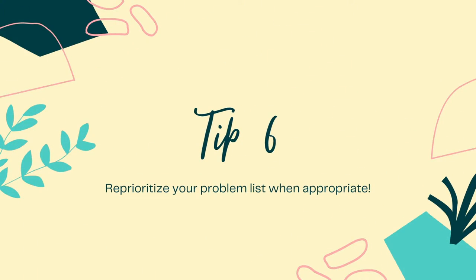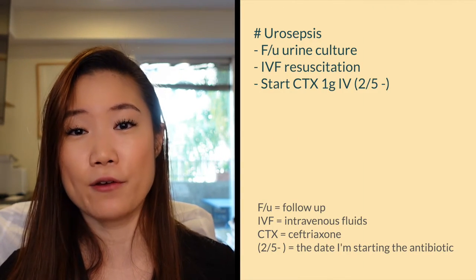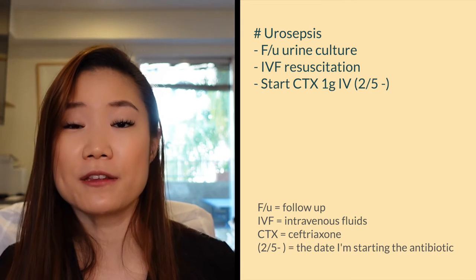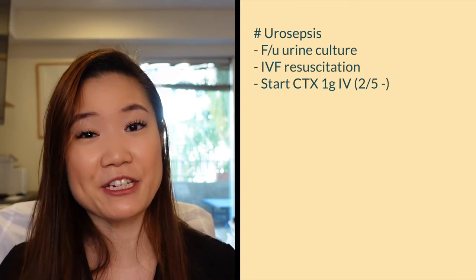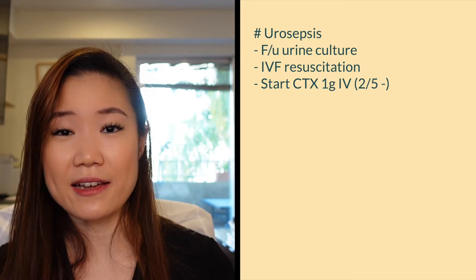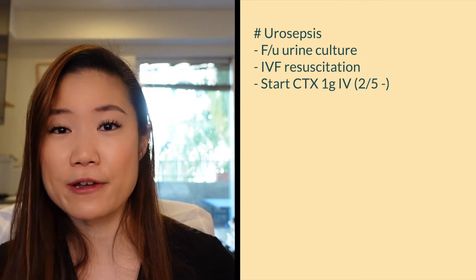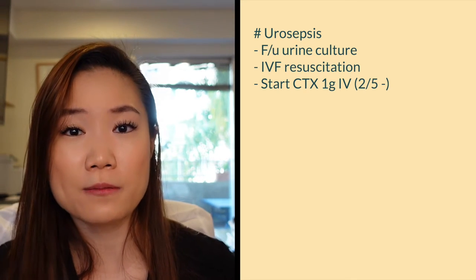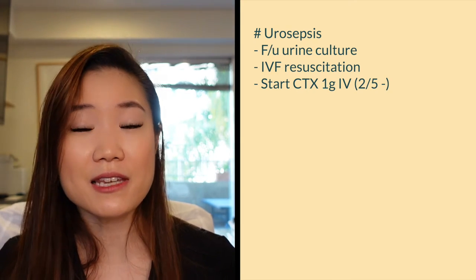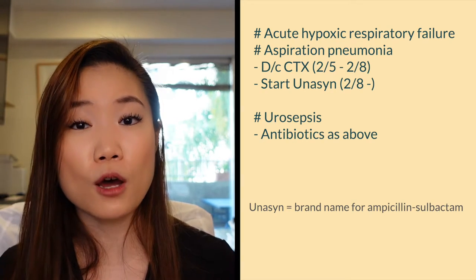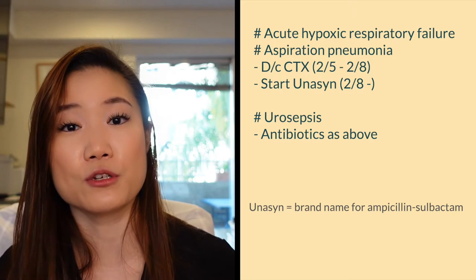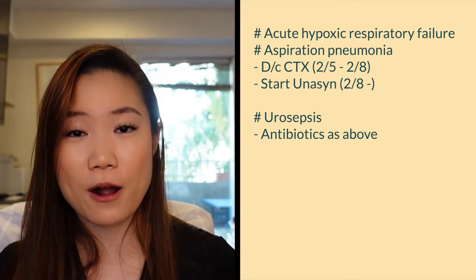Tip number six: reprioritize your problem list when appropriate. The problem list is dynamic — it often looks very different from admission to discharge. For example, if a patient comes in with sepsis secondary to a UTI and gets better on antibiotics, but on day three develops acute hypoxic respiratory failure due to aspiration, the respiratory failure is now the most life-threatening issue. So it should move to the top of the problem list, and UTI/sepsis drops lower.